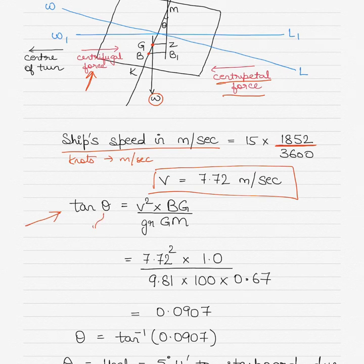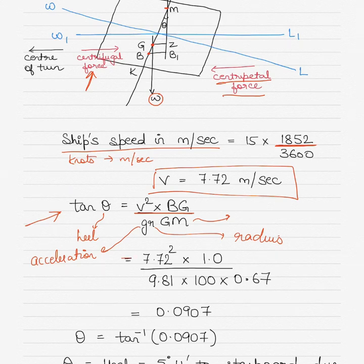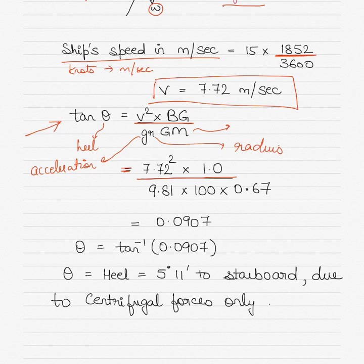The formula for calculating the angle of heel when the vessel is turning is: tan θ = v² × BG / (g × r × GM). Here θ is the heel angle, v is velocity, BG is the distance between the center of buoyancy and center of gravity — given as 1 meter. g is the acceleration due to gravity, 9.81 m/s². r is the radius of the turn — 100 meters, and GM is the distance between the center of gravity and the vessel's metacenter — given as 0.67 meters.